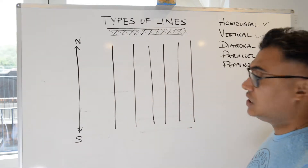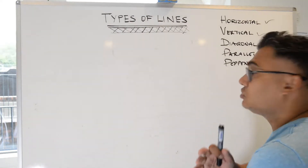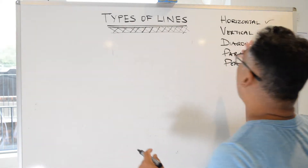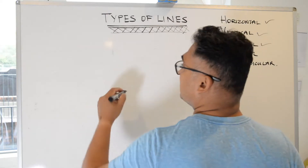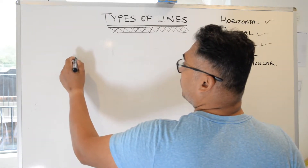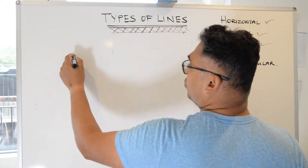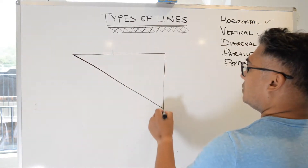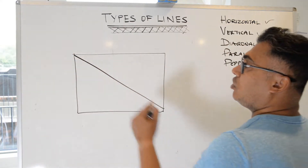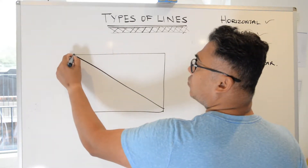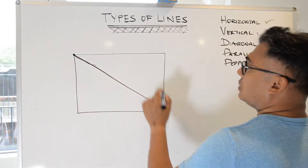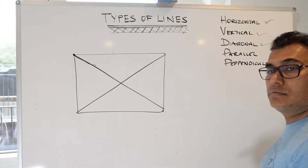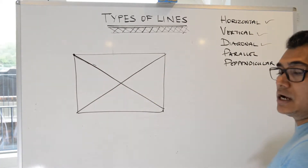The third type of line we're going to look at is diagonal lines. Diagonal lines are obviously different from horizontal and vertical lines in the sense that they run across from one corner to another corner. So for example in a rectangle, a diagonal is formed when you draw one line from one corner to the other corner. You can have a diagonal there, there, or there. In a rectangle there are two diagonals.